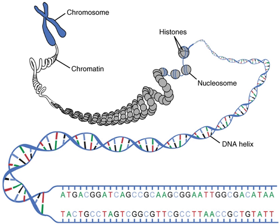=== Null terminated === The length of a string can be stored implicitly by using a special terminating character; often this is the null character, which has all bits 0, a convention used and perpetuated by the popular C programming language. Hence, this representation is commonly referred to as a C string. This representation of an N-character string takes N+1 space (1 for the terminator), and is thus an implicit data structure. In terminated strings, the terminating code is not an allowable character in any string. Strings with length field do not have this limitation and can also store arbitrary binary data.